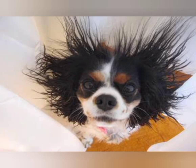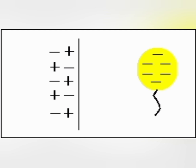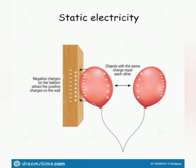Have you ever walked across the room to pet your dog, but got a shock instead? Perhaps you took your hat off on a dry winter's day and had a hair-raising experience. Or maybe you have made a balloon stick on the wall after rubbing it against your clothes? Why do these things happen? It's not magic — it's static electricity.